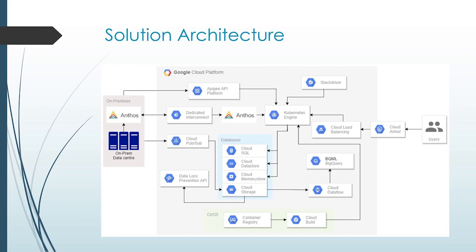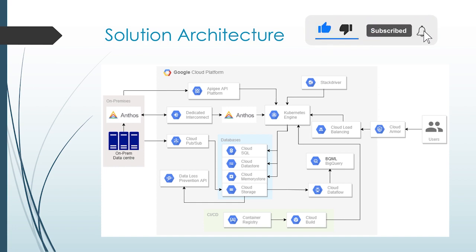I have built a solution architecture. Here I have used Anthos because their on-premises data center is currently running on Kubernetes. For Kubernetes to run on both the data center and on Google Cloud, Anthos is the best way to manage it, because they are not going to fully migrate everything to the cloud — they need their on-premises data center active. Using Anthos makes it very easy to manage both on-premises data center clusters and Google Cloud clusters.